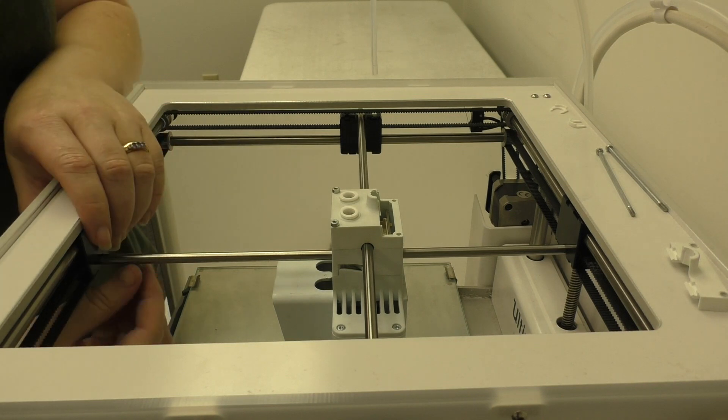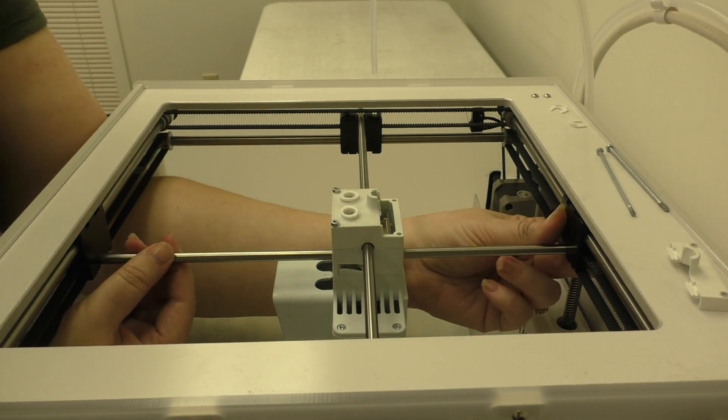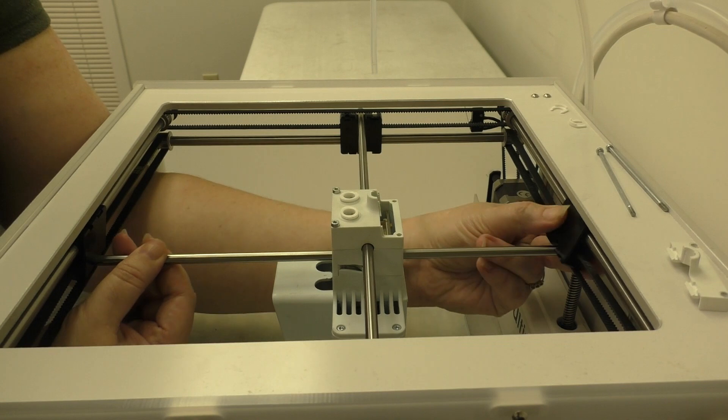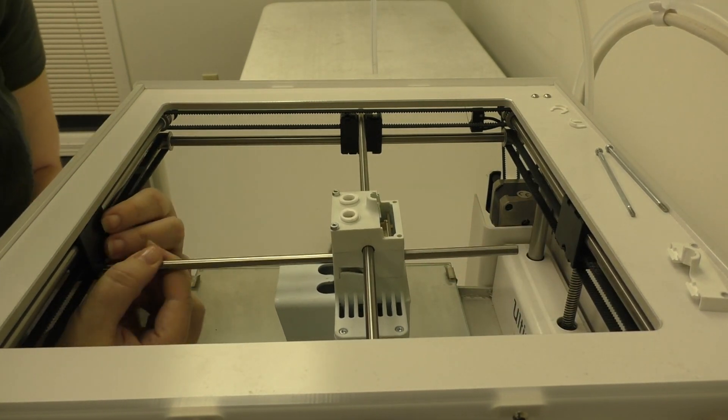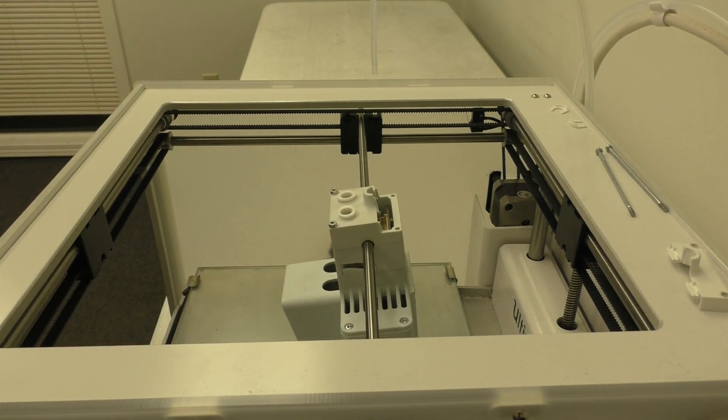Next, we have to remove the print head shafts. I like to start with the Y shaft. Tilt the rear sliding block forward so that you can release the Y shaft. Do the same thing with the front sliding block and pull the whole print head shaft forward out through the front of the printer.